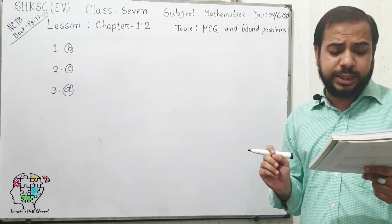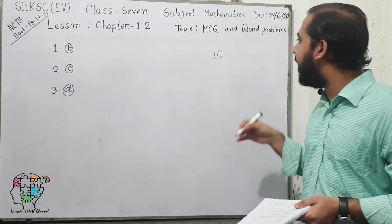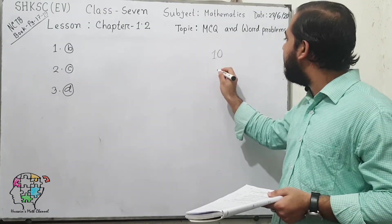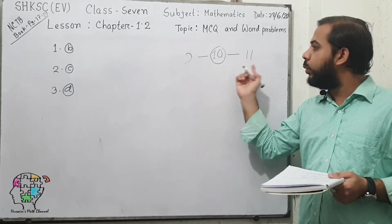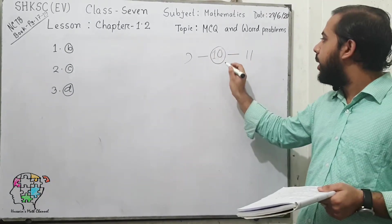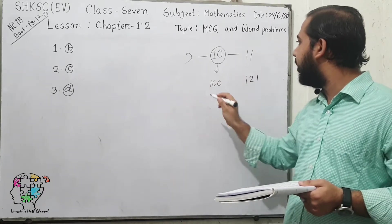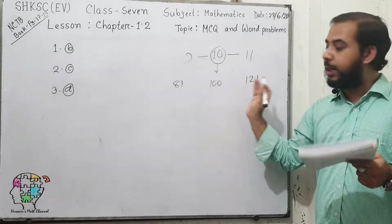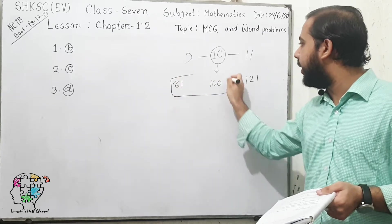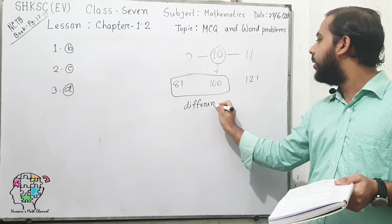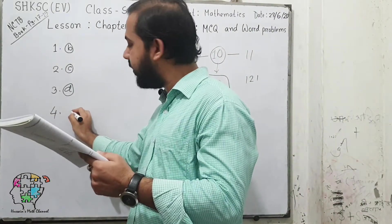From the question, you can see two consecutive numbers. If one number is 10, then another number will be either 9 or 11. The square of 10 is 100, the square of 11 is 121, and the square of 9 is 81. The difference of 100 and 81 gives us 19. So our answer is 9, and the answer for question number 4 is option C.